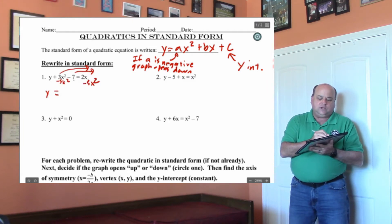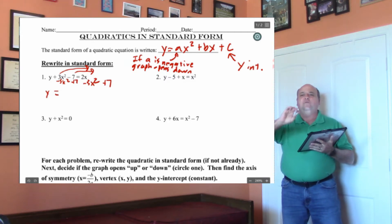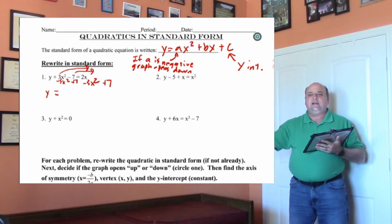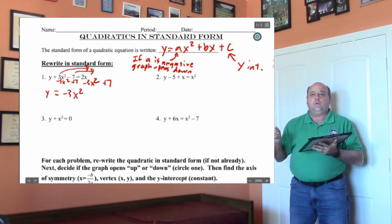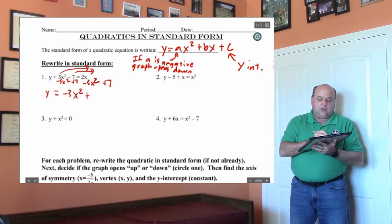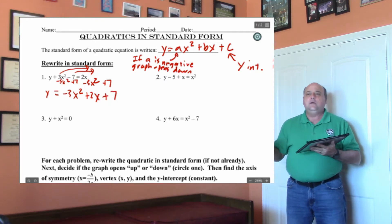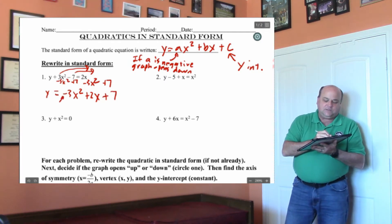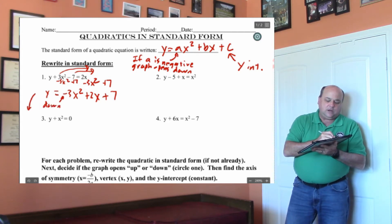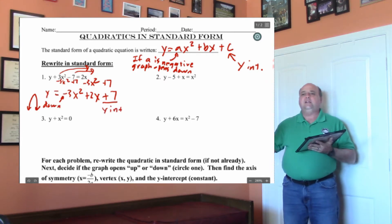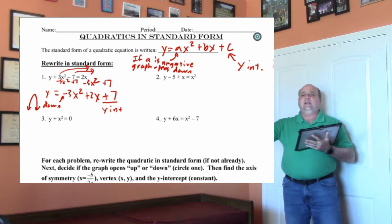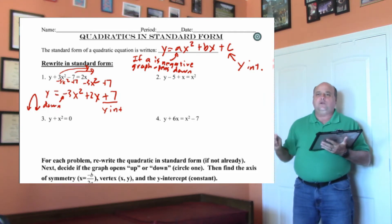If we showed our work, remember, when you move a number across the equal sign, the sign of the term will flip. We want the x squared first — we have a positive 3x squared. We're going to move it across and end up with a negative 3x squared. Then write down the plus 2x, it's already on the right, and then the minus 7 will turn into a plus 7. This means the graph opens down, and the 7 is going to be the y-intercept.